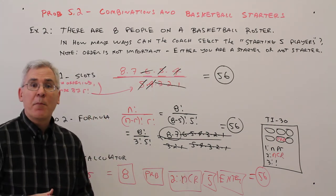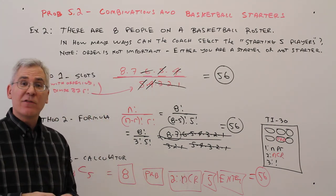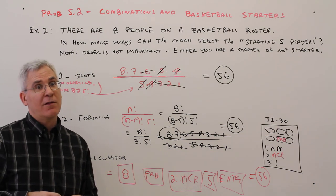So there you have it, how to use combinations to find out the number of different ways the coach can select the starting 5.